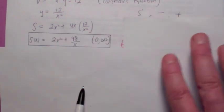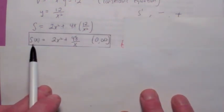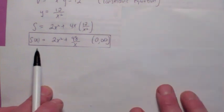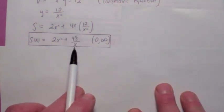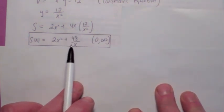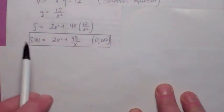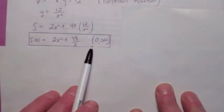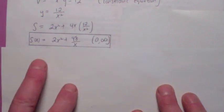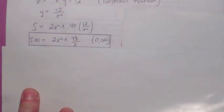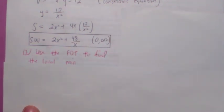When you plug in 12/x² for y, you get this. So the surface area in terms of x is 2x² + 48/x. It's pretty obvious to see that x can't be 0 because if x is 0, y is undefined. So again, this is an open interval problem. We're going to find the local minimum and then show that it's also absolute minimum.